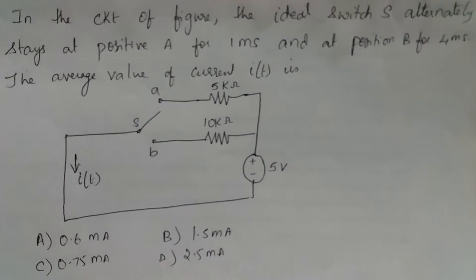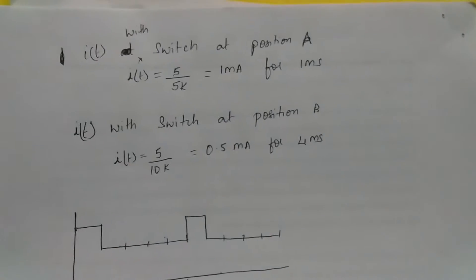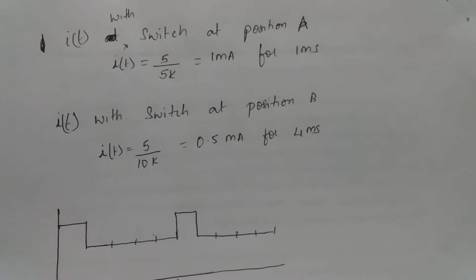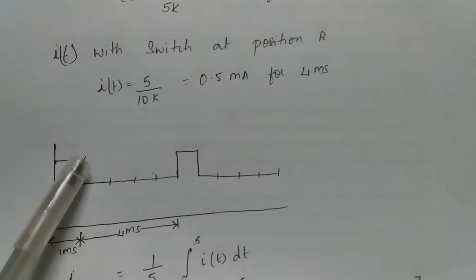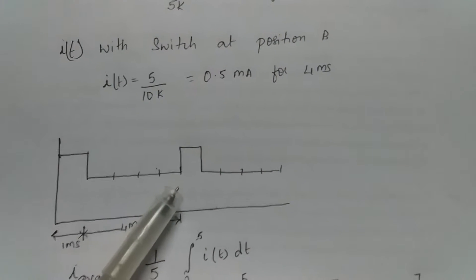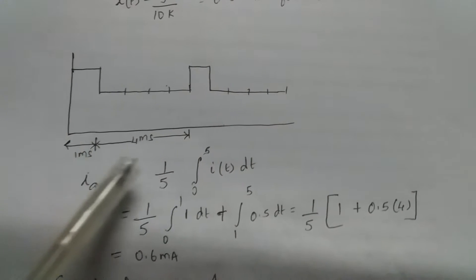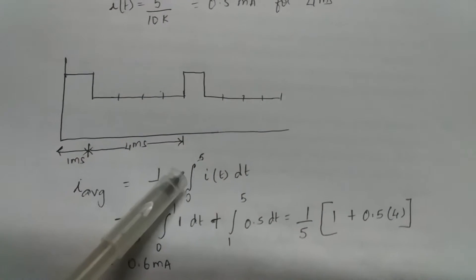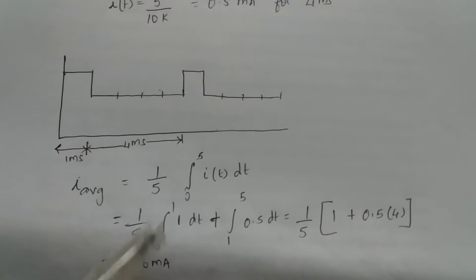The current looks like this: for 1 millisecond the current is 1, and for the remaining 4 milliseconds the current is 0.5 milliamps. What is I average? It is 1 by 5 integral of 0 to 5 I(t) dt. So 1 by 5, from 0 to 1 millisecond it is 1 dt, plus from 1 to 5 millisecond it is 0.5 dt.